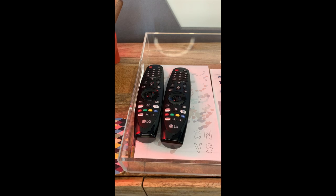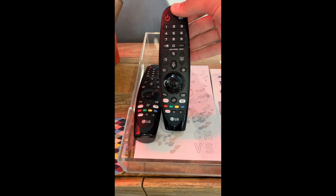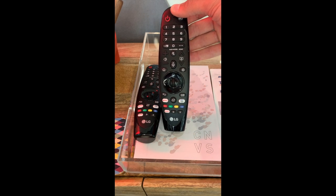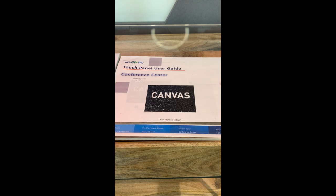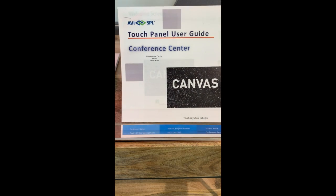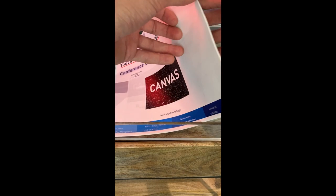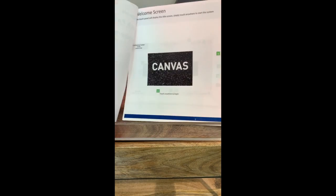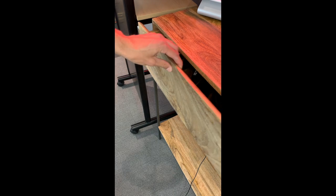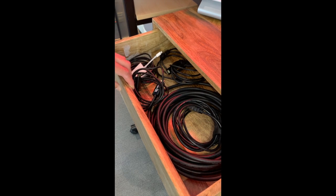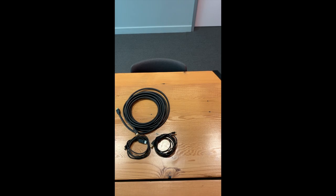You're also going to have your two remote controls — those are to turn on and off the TV, and you can also control picture settings as well. We also have our touch panel user guide to help you troubleshoot any issues. Within the left-hand drawer you're going to find all the cords and plug-ins you could utilize for both Mac and PC.